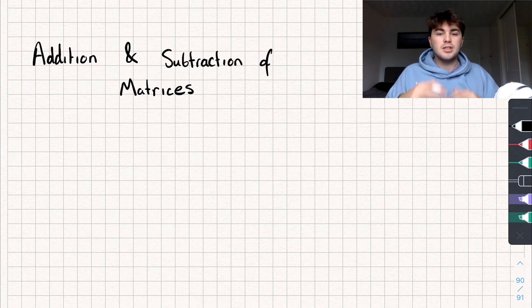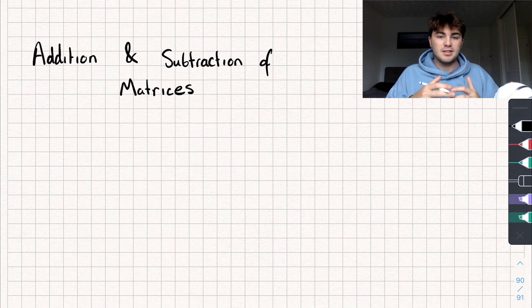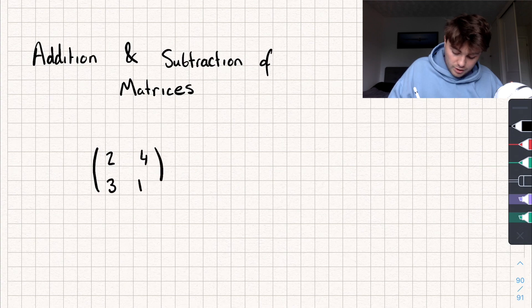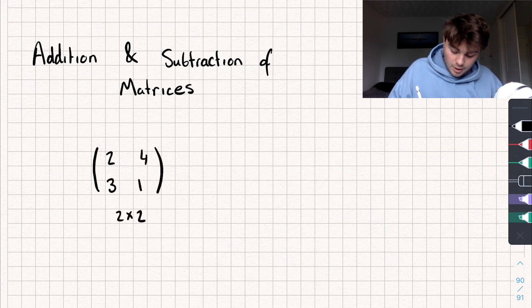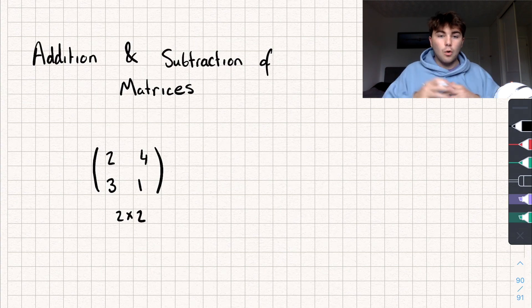So the first thing we need to know is to add or subtract matrices they need to be of the same dimension or the same order. So for example let's take a 2 by 2 matrix, so 2, 4, 3, 1 for example. Now this is a 2 by 2 matrix and so I can only add it to another 2 by 2 matrix or subtract it to or from another 2 by 2 matrix.